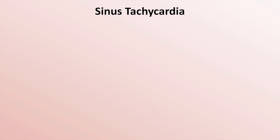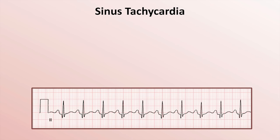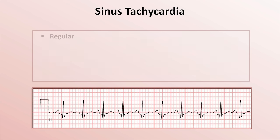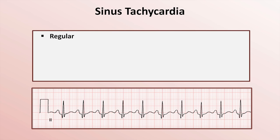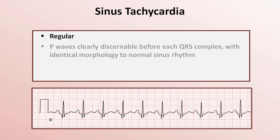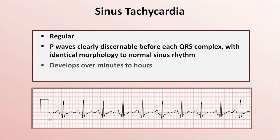On EKG, the hallmark features of sinus tachycardia are: first, that it is regular; second, that P-waves are clearly discernible before each QRS complex with identical morphology to normal sinus rhythm; third, sinus tach develops over minutes to hours rather than over a few seconds; and fourth, the rate is usually variable over time rather than being fixed.